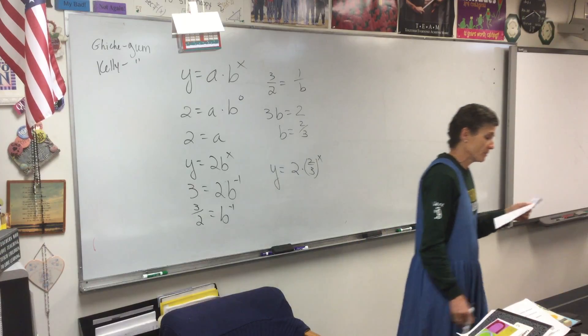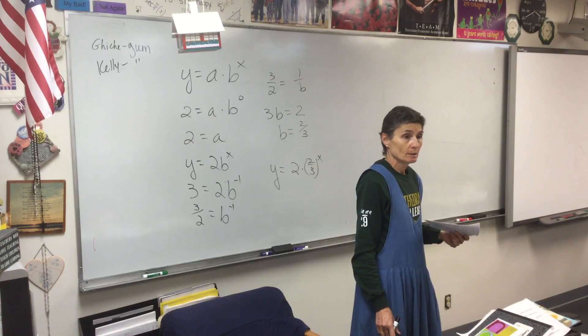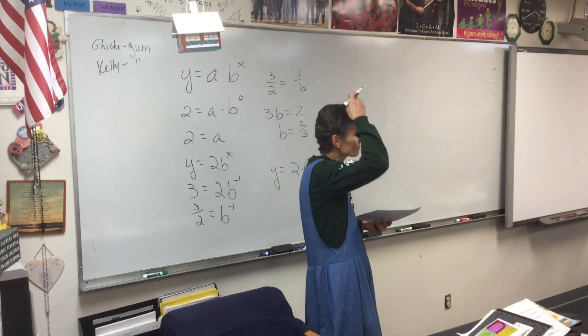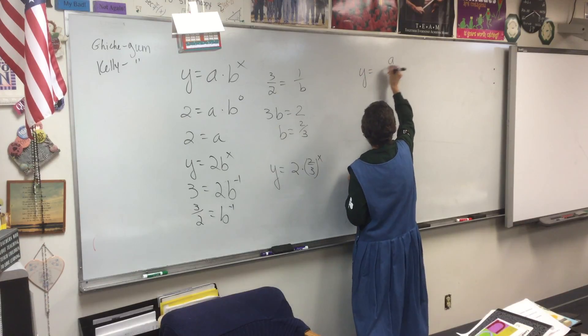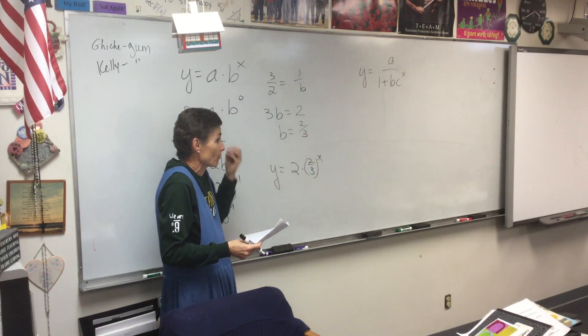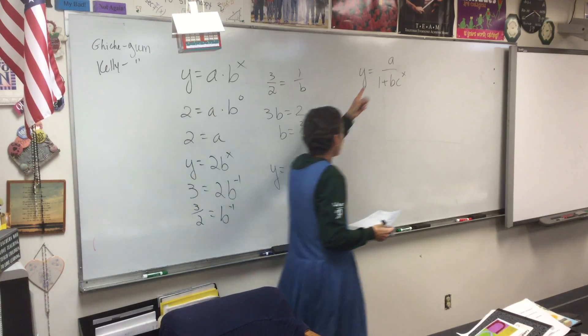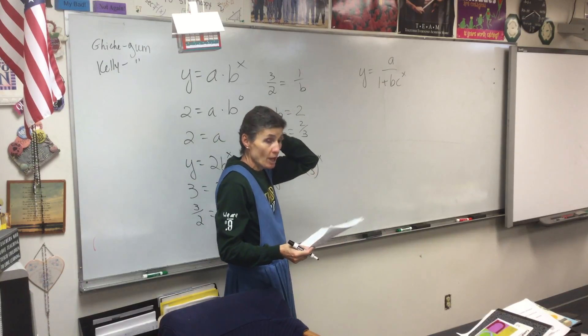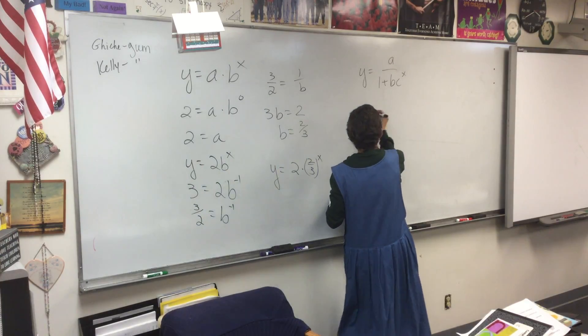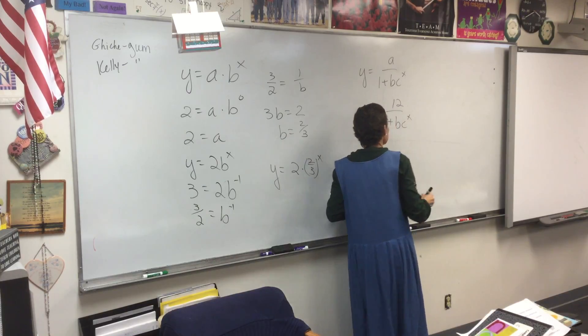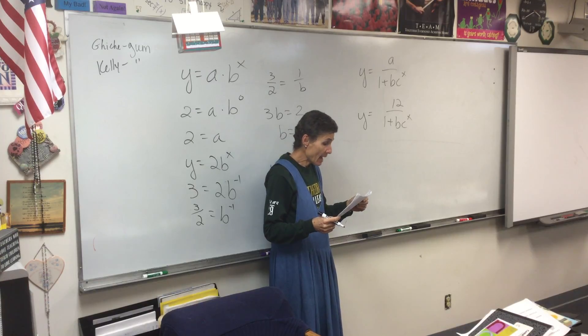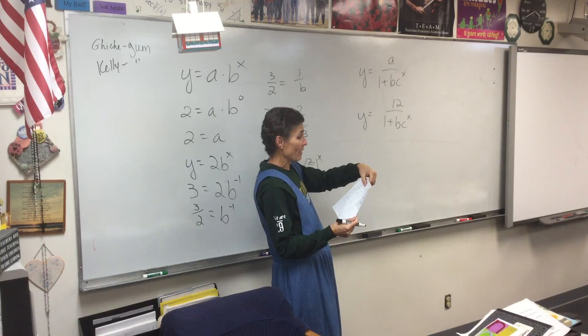Now we want a logistic function with an initial value of 10, limit to growth 12, and passing through 2, 2. First of all, I've got to remember that my format is this. You simply have to memorize that. Now you need an A, a B, and a C. Which one are we going for first? A is not 10. A is 12. The limit to growth is A.